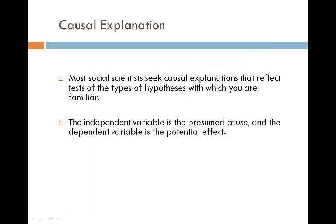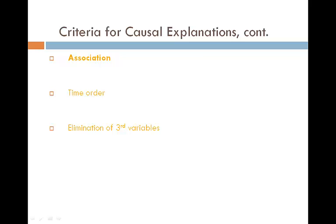Most social scientists seek causal explanations that reflect tests of the type of hypothesis with which you are familiar. The independent variable is the presumed cause and the dependent variable is the potential effect. To determine the causal relationship, we use three criteria: number one, association or relationship; number two, time order; and number three, elimination of third variables.